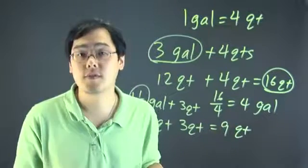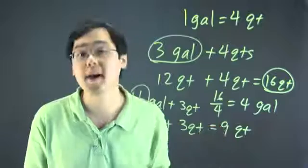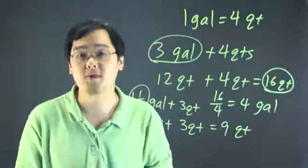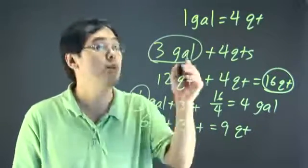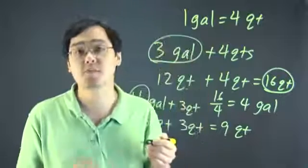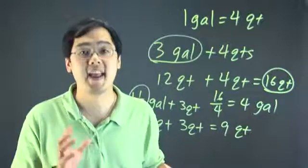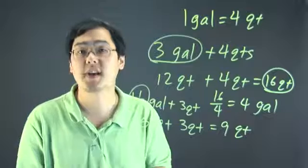Now if you wanted to convert it back to gallons, just divide nine by four, and whatever number you have will be the number of gallons that you have. But when it comes to adding gallons and quarts, just multiply the gallons by four, and add the like units, and you'll be good to go.